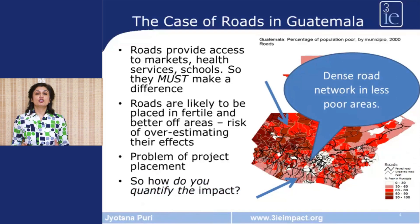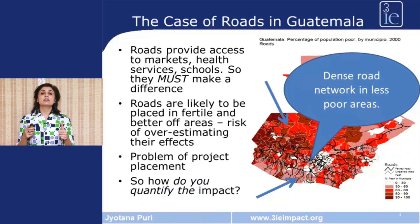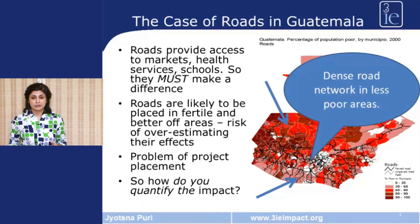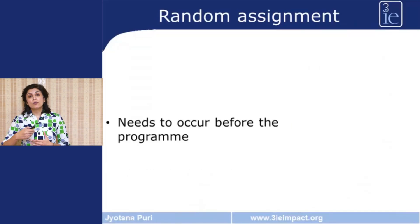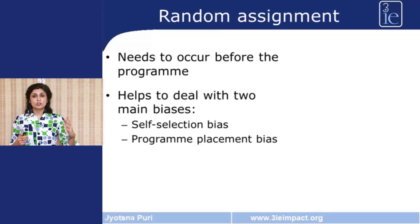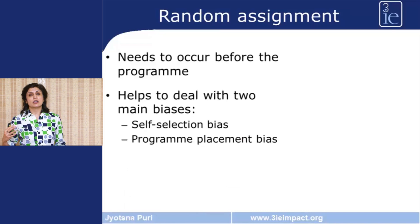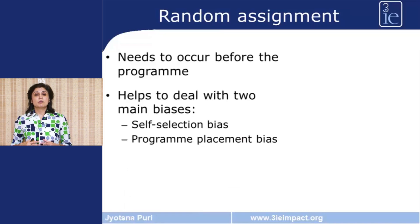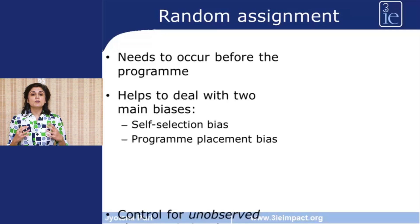In this scenario, how should you quantify the impact that roads or road-related works are making on poverty? In most impact evaluations, what you end up wanting to use is random assignment. Random assignment, however, needs to occur before a program is rolled out. You end up using random assignment because you're trying to deal with two types of biases: the first is self-selection bias and the second is program placement bias. Random assignment is also very robust and useful because it helps to control for unobserved characteristics that may affect the outcome of the program.